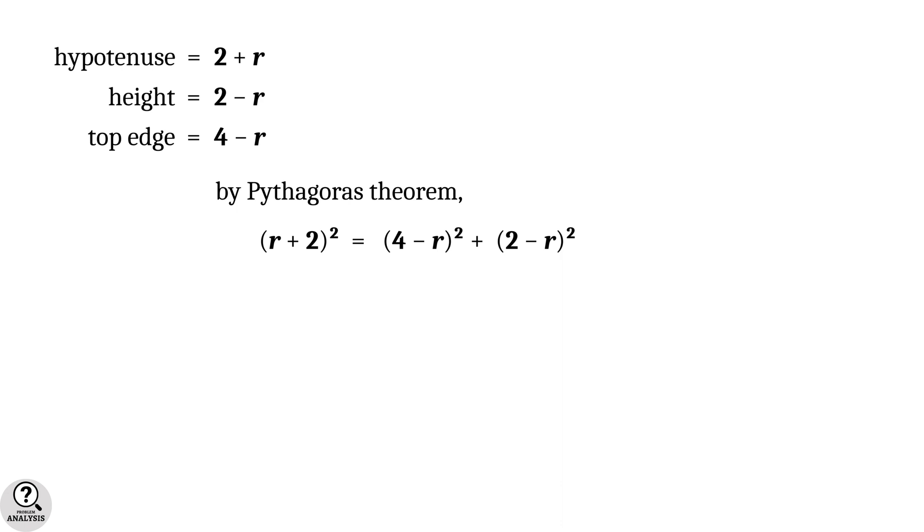The left hand side expands to r² + 4r + 4 and the right hand side expands to 16 - 8r + r² + 4 - 4r + r², that is equal to 20 - 12r + 2r². Finally, it simplifies to r² - 16r + 16 = 0, a quadratic equation in r.